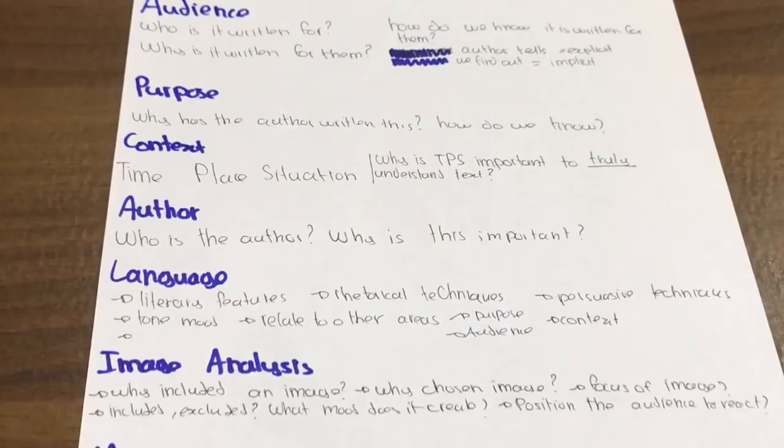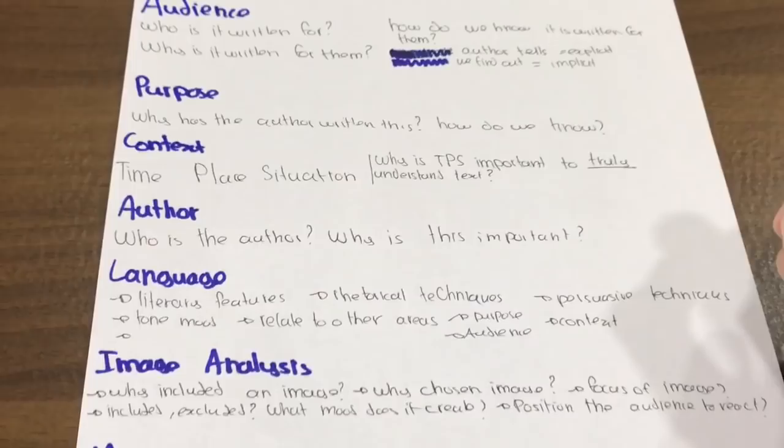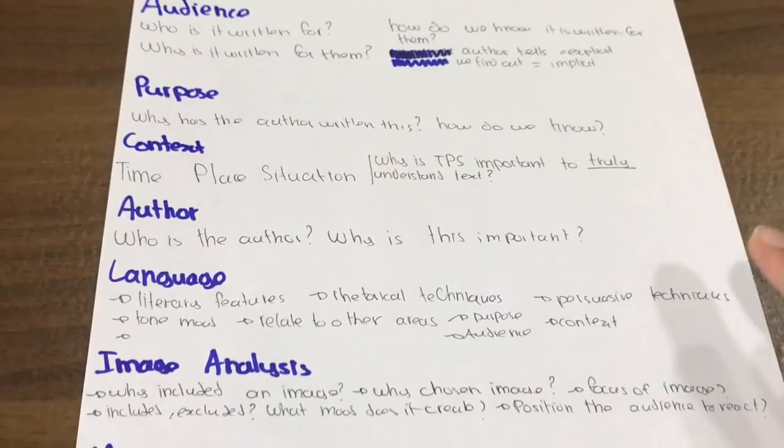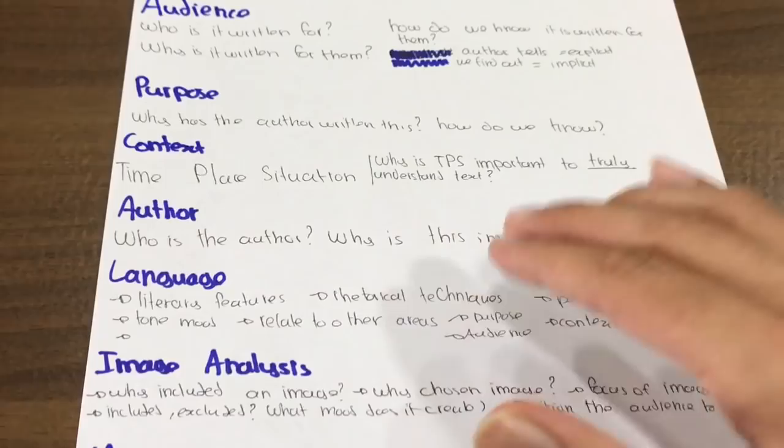The next thing, language. What are the literary features? What are the rhetorical techniques? What are the persuasive techniques, the tone, the mood, and how do these things relate to other areas? For example, about that aviation security, maybe the language is very colloquial. Maybe it's very rude. Maybe it includes swear words, something like that. How does this add meaning to the text? How does the language relate to the purpose or the audience? Remember about the kiddie words. So the language is specific to the audience to help the audience further relate to the text. Also how does it relate to context? So if you need to identify what techniques the author is using to make his text more convincing, yeah, that's a very essential component.